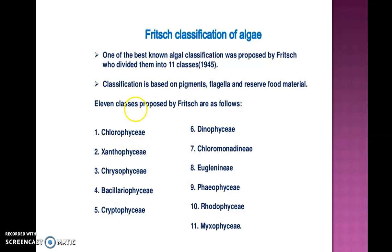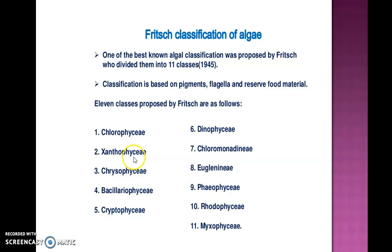Fritch proposed 11 different classes of algae: Chlorophyceae, Xanthophyceae, Chrysophyceae, Bacillariophyceae, Cryptophyceae, Dinophyceae, Chloromonadinae, Euglenophyceae, Phaeophyceae, Rhodophyceae, and Myxophyceae.